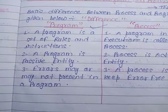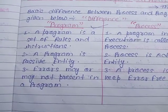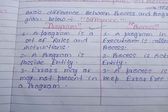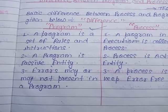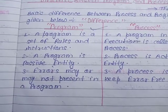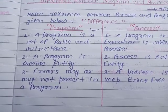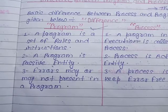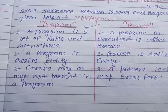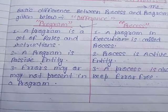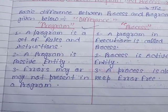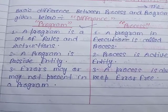A program is a passive entity, meaning you can't execute or perform any operation on a program. Whereas a process is an active entity — you can perform many operations on a process.